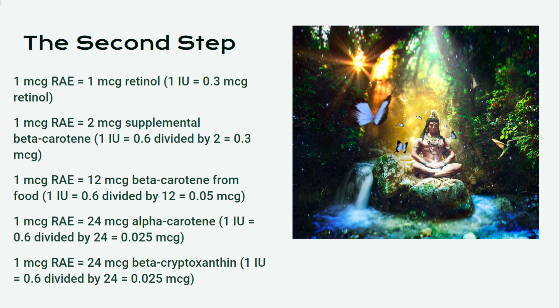The second step of the conversion process: 1 microgram RAE equals 1 microgram retinol — retinol is from animal sources. So for an animal source of 1 IU, that equals 0.3 micrograms of retinol. 1 microgram RAE equals 2 micrograms supplemental beta-carotene (1 IU × 0.6 ÷ 2 = 0.3 micrograms). 1 microgram RAE equals 12 micrograms beta-carotene from food (1 IU × 0.6 ÷ 12 = 0.05). 1 microgram RAE equals 24 micrograms alpha-carotene or beta-cryptoxanthin (1 IU × 0.6 ÷ 24 = 0.025).